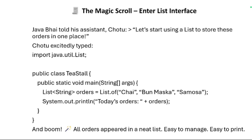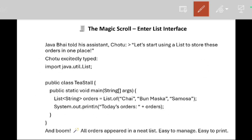Java Buy told his assistant Chotu: 'Let's start using List to store orders in one place.' Chotu explained: anything you want to use in Java, you have to import it first. So he imported `java.util.List`. The syntax to create the list is: `List<String> orders` — here `String` is the data type of items you want to store.